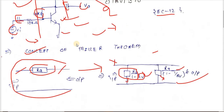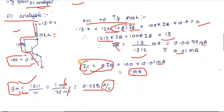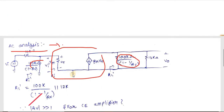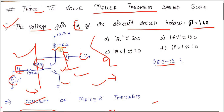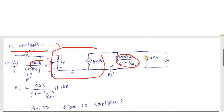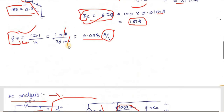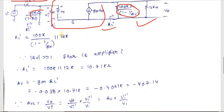The complete AC model has no Re resistance — the emitter is connected directly to ground. The collector-side RC = 12 kΩ is connected to ground in AC. So the full AC equivalent circuit is now drawn with these components.